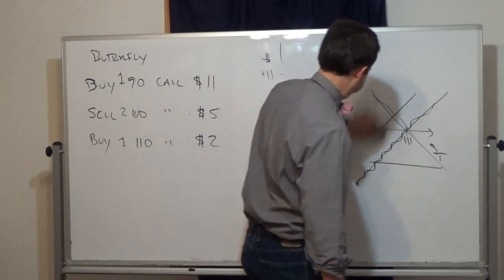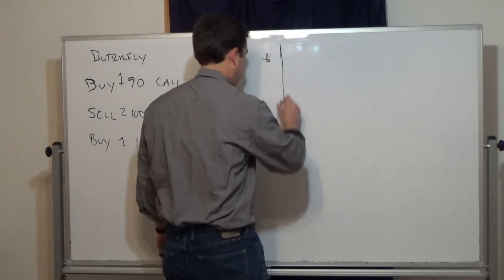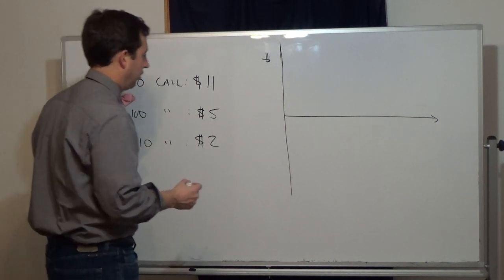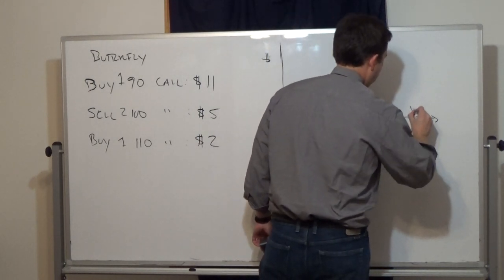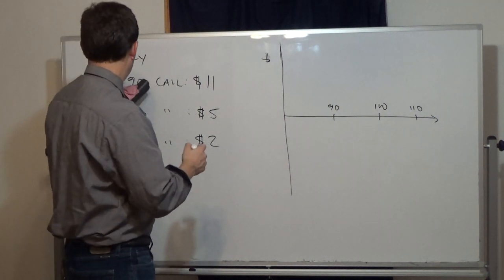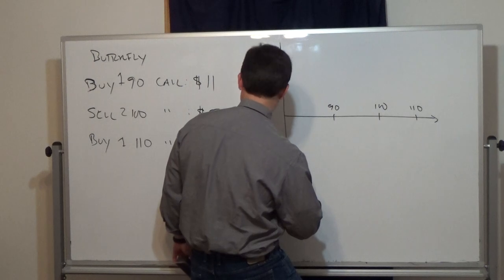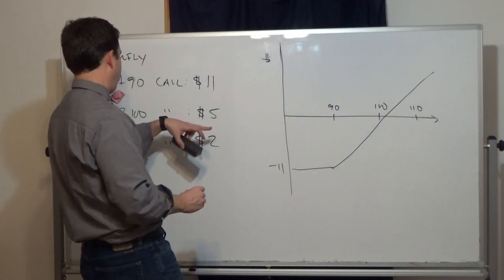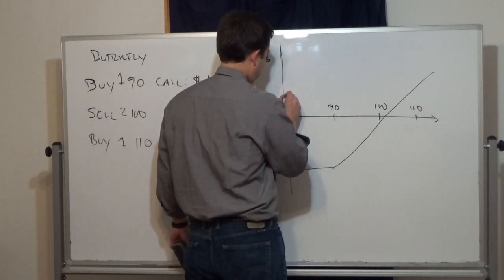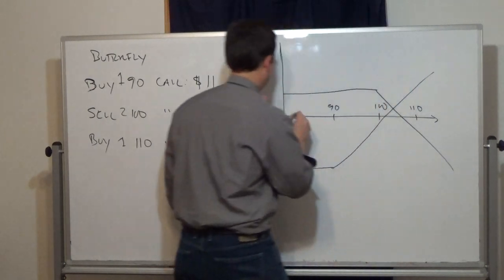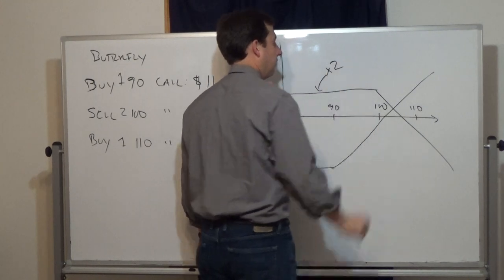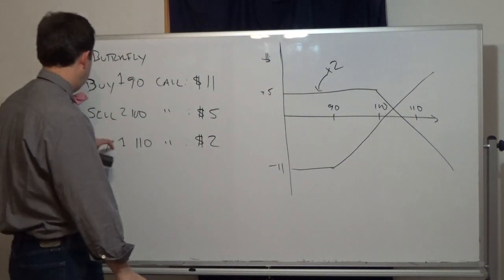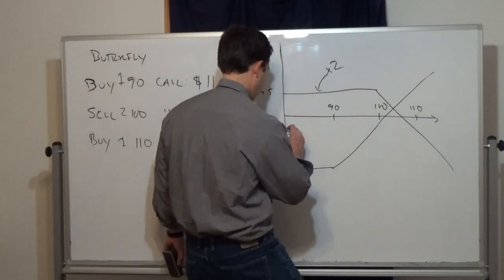Let's draw the combined position. It's useful to draw each component individually. The long 90-call costs $11 and slopes upward from $90 — this is negative $11 below $90. The two short 100-calls each at +$5, so times two, that line reflects two options. The long 110-call costs $2. The net cost of the whole spread is $3.